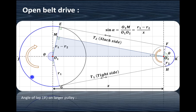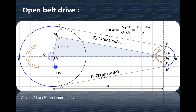As you can see over here, G, J, and E — this is known as the angle of lap on the larger pulley, whereas E, K, and H is known as the angle of lap or angle of contact on the smaller pulley. This is the arc for which the belt remains in contact with the pulley. In this case, theta — the angle of contact — is equal to pi plus alpha on this side plus alpha on this side. So it is pi plus 2 alpha, which is the angle of contact on the larger pulley.